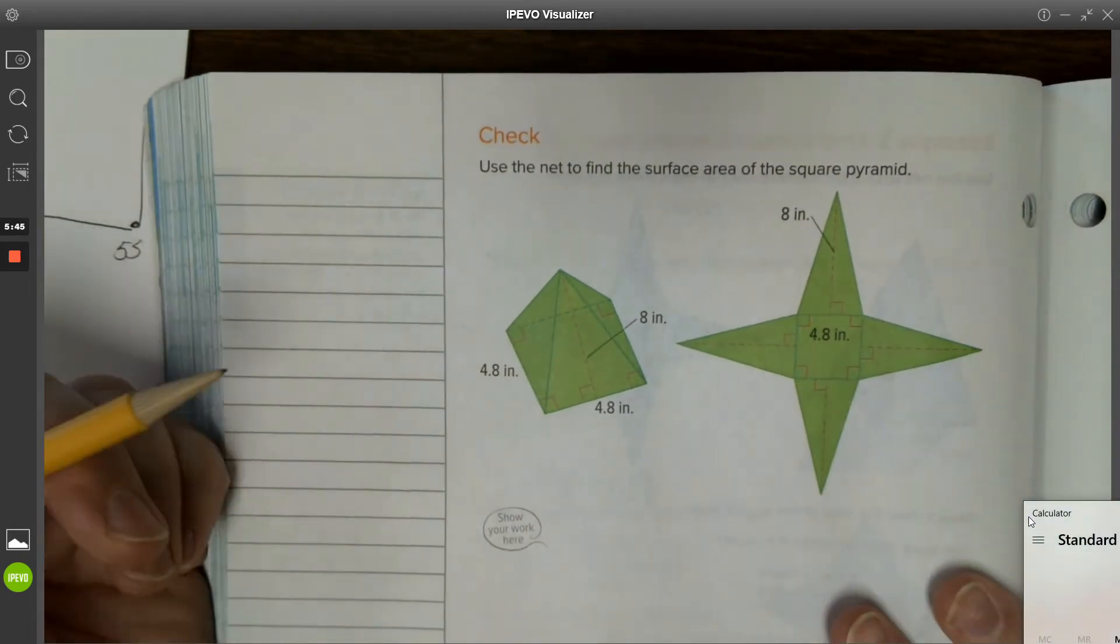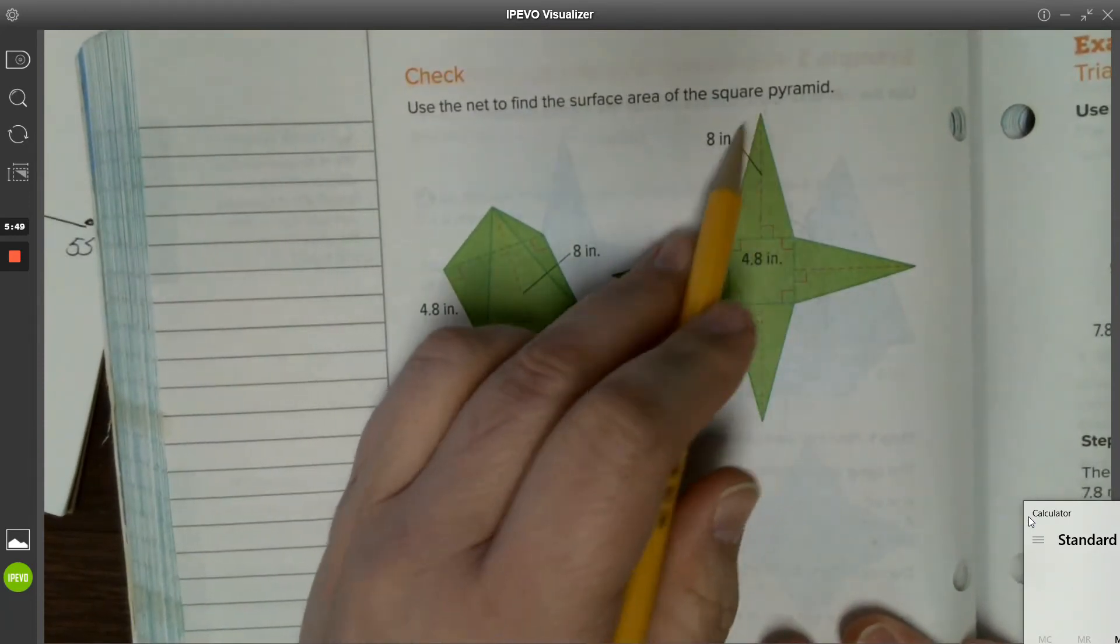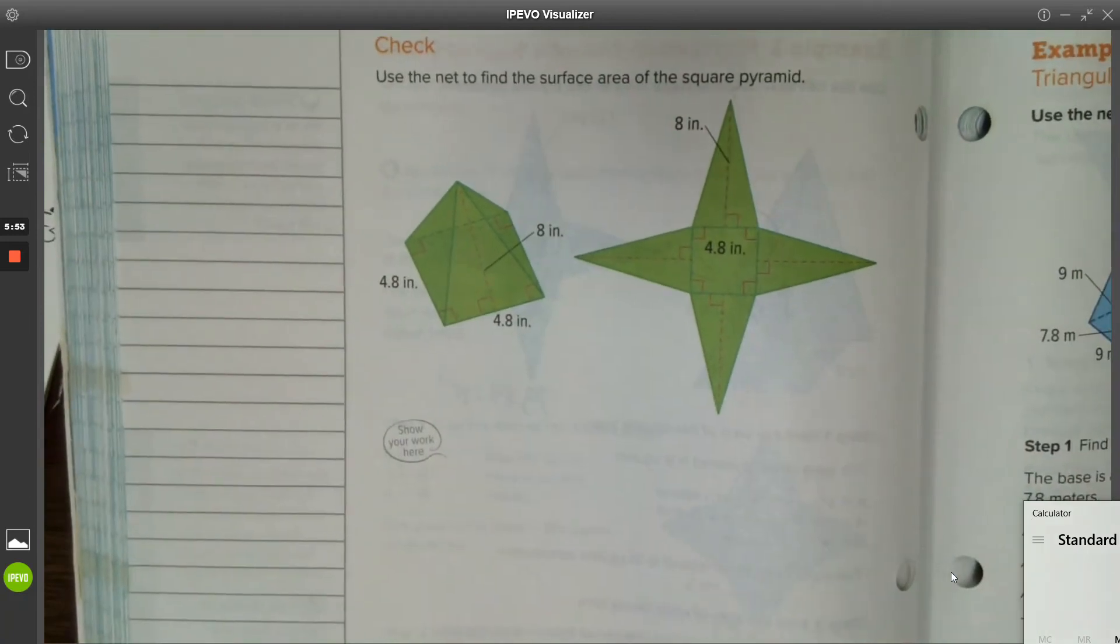Let's go ahead and try this check. I would like you to try this one on your own. Find the area of the base and then the area of your faces, and then add them all together. So go ahead and pause here, take a moment and solve.